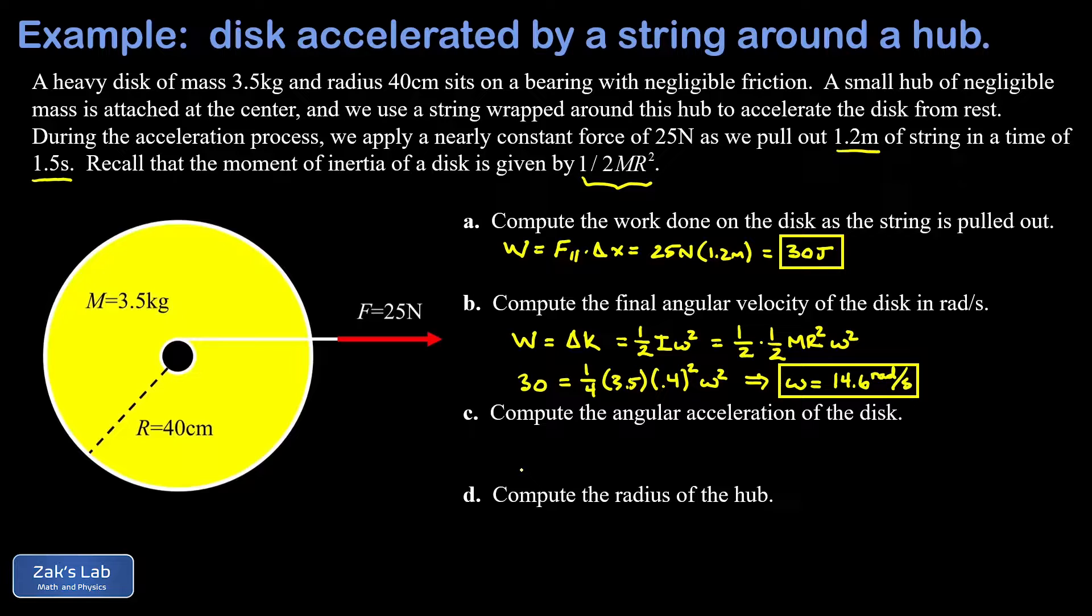Next, we want to get the angular acceleration of the disk. And there's a subtle point that I want to highlight here. The force is constant that we're applying on this hub. That means the torque we're applying is constant, which in turn means the angular acceleration is constant. So to get the angular acceleration at any moment in time, all we have to do is look at the simple rate of change in the angular velocity.